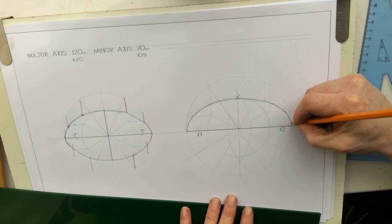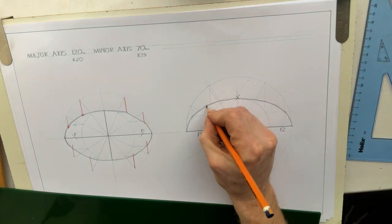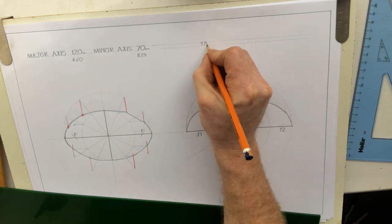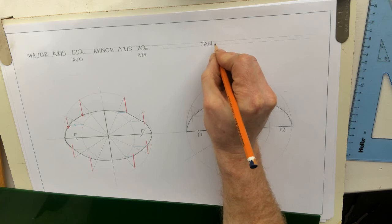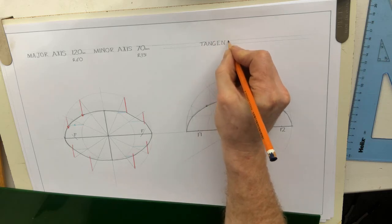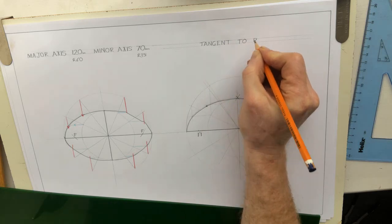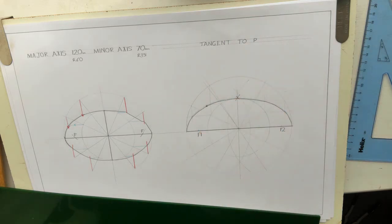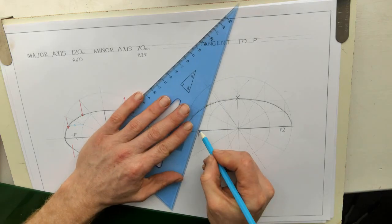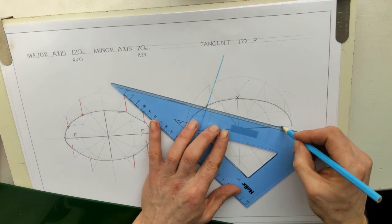So I'm going to go to the top half of this. So they'll tell you what the point is that the tangent is going to. Point P is on the curve. So what you do is you find the focal points, which you've already done.